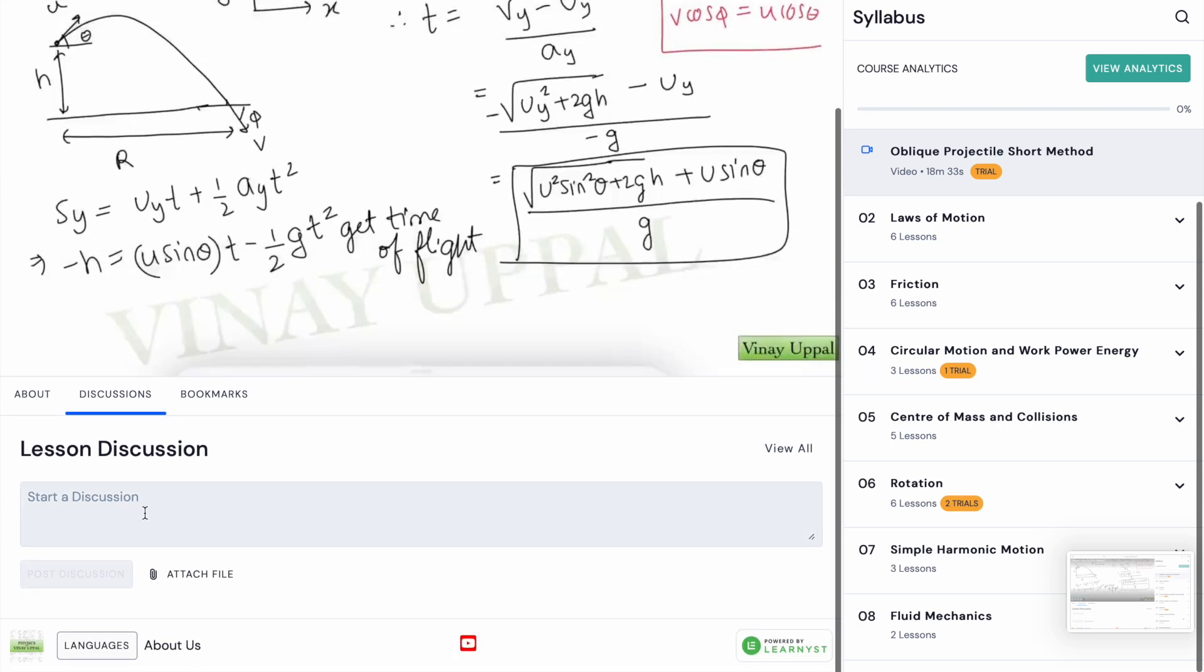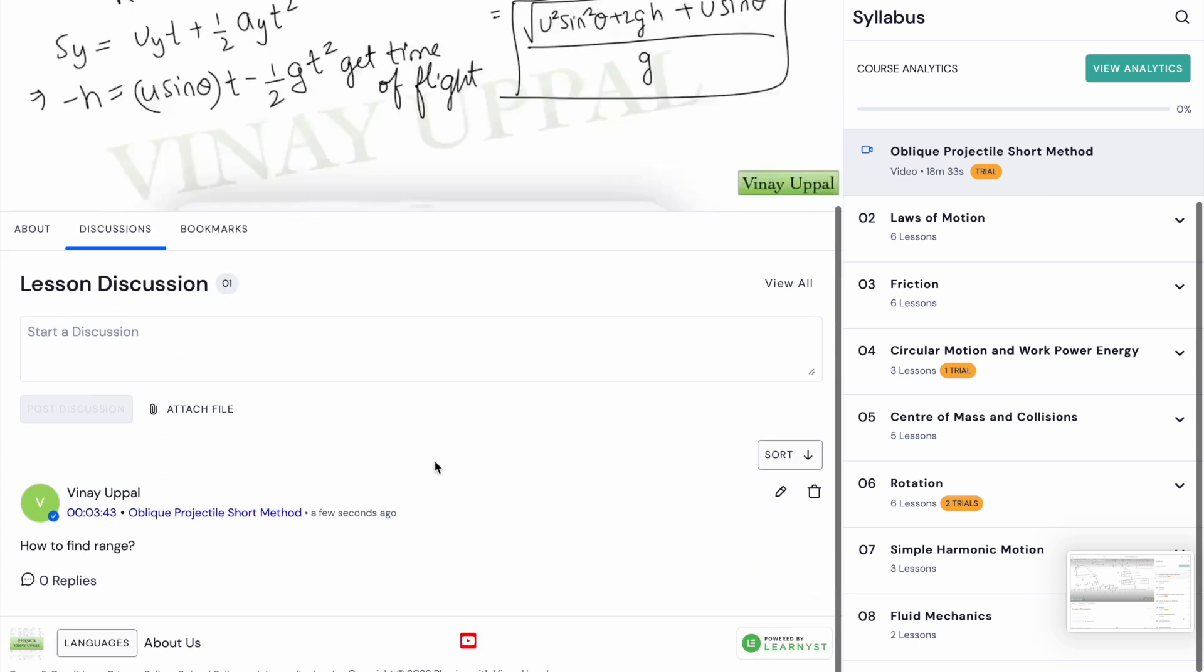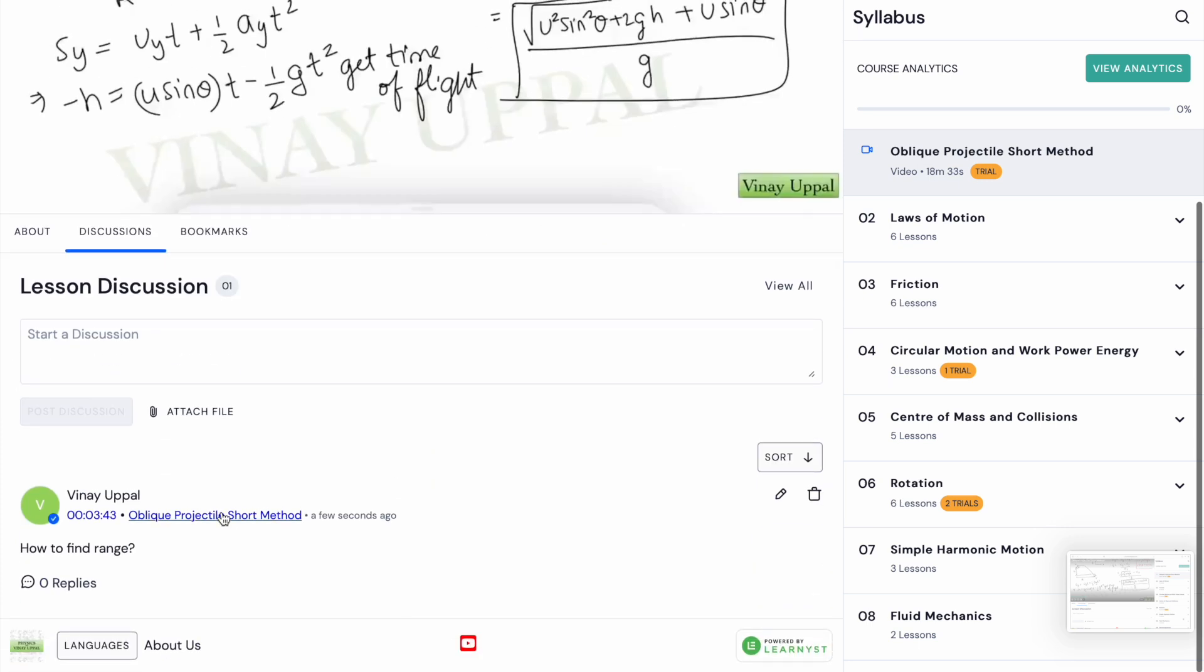You want to ask a doubt here, so just pause the video at that instant and just type in a doubt. Let's say 'how to find range.' Once you ask this doubt I will get a notification immediately and I'll be able to see the timestamp. That timestamp will appear automatically wherever you pause the video and typed in the question. So I'll be able to just quickly go to that timestamp and answer your doubt. Others can also view your doubt and they can also participate in the discussion, and you can also view other students' doubts and participate in their doubt discussion.